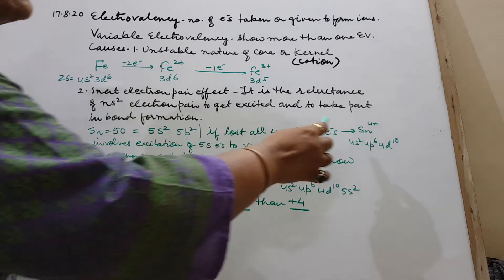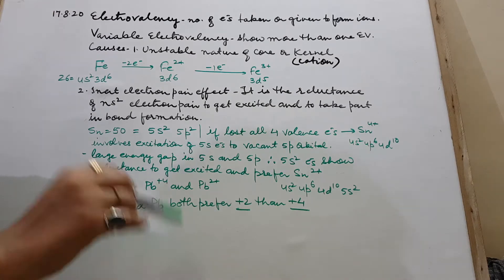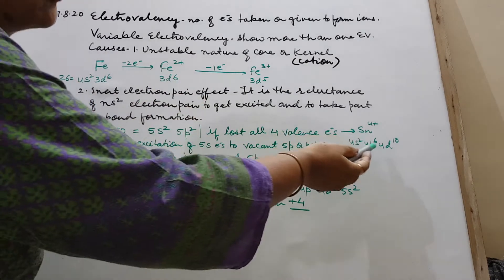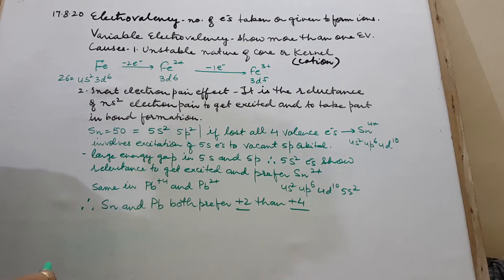Then we also know it is stannic. It also forms stannous. Why so? How so? Although all 4 had gone, this was all right, quite stable. Now what happens?